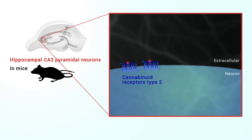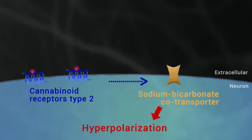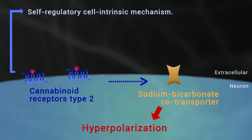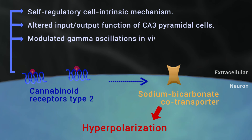Upon activation, they modulate the activity of the sodium bicarbonate co-transporter, leading to a hyperpolarization of the neuron. Cannabinoid receptors type 2 activation occurred in a purely self-regulatory manner, robustly altered the input-output function of CA3 pyramidal cells, and modulated gamma oscillations in vivo.